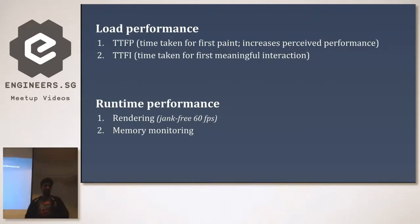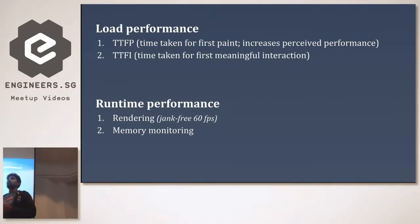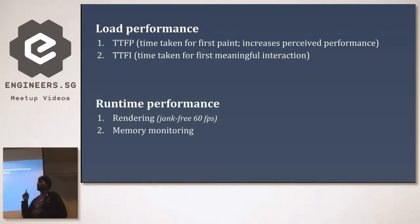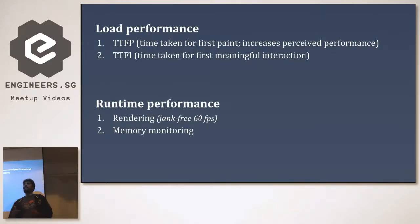The second load performance metric is time to first meaningful interaction. When you deliver content to users, the next step is obviously they'll try to interact with it. For interaction to happen we have to load the JavaScript bundle. In Ember apps the JavaScript bundles are quite huge, so we need to split the huge JavaScript bundles into multiple bundles so that we can load the critical JavaScript piece to give the fastest interaction as possible.